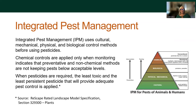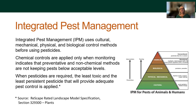Integrated pest management is described as an ecosystem-based strategy that focuses on long-term prevention of pests and their damage through a combination of techniques such as biological control, habitat manipulation, modification of cultural practices, and using pest-resistant varieties of plants. With IPM, you start at the bottom of the pyramid and look at how you're taking care of your garden — culturally. Then you use physical and mechanical approaches, then biological controls. Finally, if none of that works and things are really out of control, there are chemical solutions, but that's a last resort. The goal is to never get there in the first place.